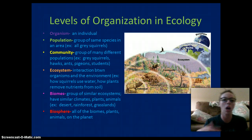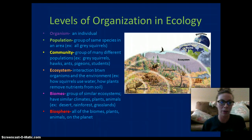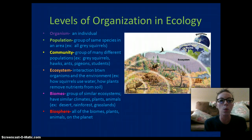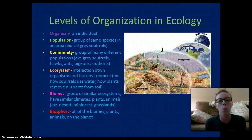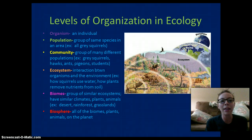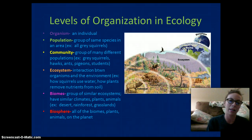So the community includes the squirrels, the hawks, the ants, the pigeons, students, the trees, etc. An ecosystem is going to be the interaction between organisms and their environment — the abiotic factors, which are the non-living factors such as water, sunlight, and soil, and its interactions with the living things, the biotic factors, such as the plants and the squirrels that live in that area.